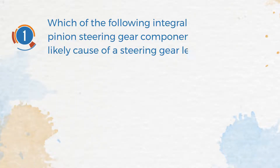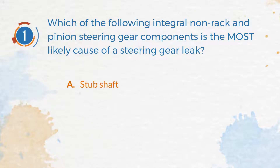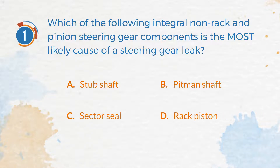Number 1. Which of the following integral non-rack and pinion steering gear components is the most likely cause of a steering gear leak? A. Stub Shaft. B. Pitman Shaft. C. Sector Seal. D. Rack Piston.